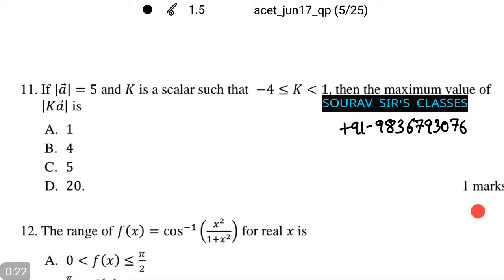The first sum says the modulus of vector a equals 5 and k is a scalar such that k lies between minus 4 to 1 inclusive of minus 4. Then the maximum value of mod k times vector a is among the following options.